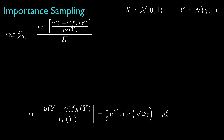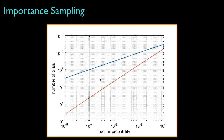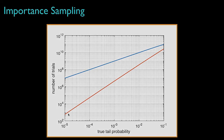Now that we've computed that, we can compare with the result obtained earlier for the Monte Carlo method with standard sampling. Here again is the plot of the number of trials required to attain an RMS estimation error of 10 to the minus 6 as a function of the true tail probability for standard sampling, and here's the plot when using importance sampling with this secondary distribution. When the true probability is 10 to the minus 5, the number of trials required is four orders of magnitude smaller than for standard sampling. Other secondary distributions might yield even more improvement — part of the art of importance sampling is selecting a density that is practical and provides good efficiency gains.